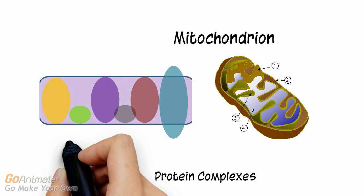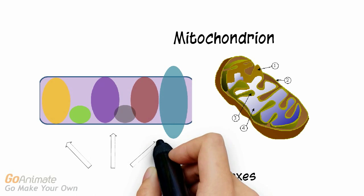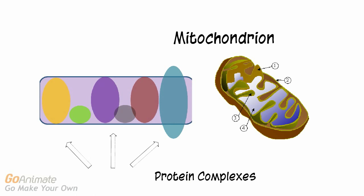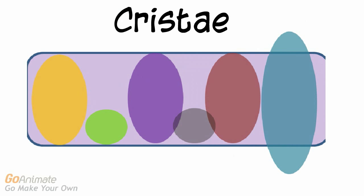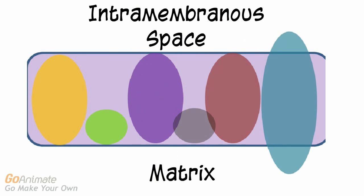Embedded in the membrane is a series of protein complexes. The membrane is called the cristae. The outer portion of the membrane is called the intramembranous space. The inner portion is called the matrix.